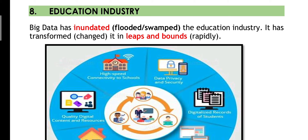Instead of forcing that child into regular courses like CA, CS, LLB, MBA, or doctor, he could be given the choice to maybe pursue journalism, interior designing, music, or painting — all depending on the interest of the student, which is evaluated from big data.